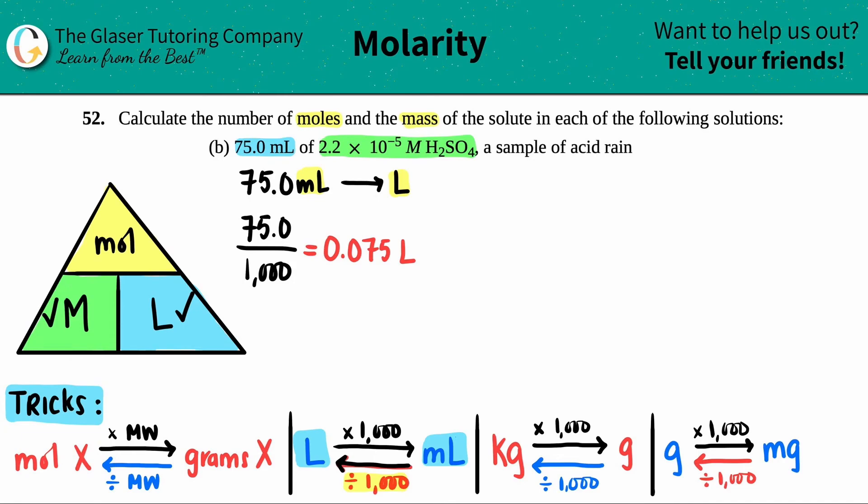Now we have this number, so we have two out of the three variables. We can solve for the other one, and that's what they want—they wanted us to calculate the moles. How do we use this chart? Whichever one you're searching for, in this case moles, you're going to hover over it with your thumb if you drew this on paper.